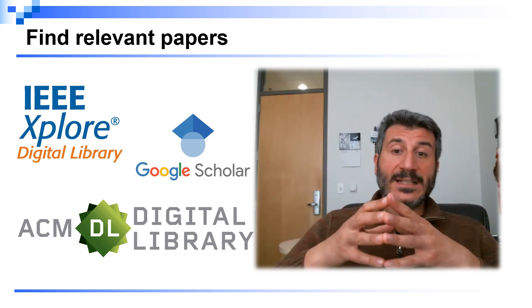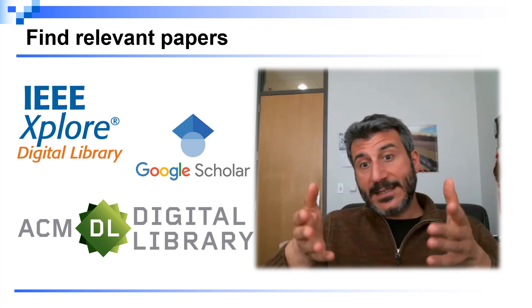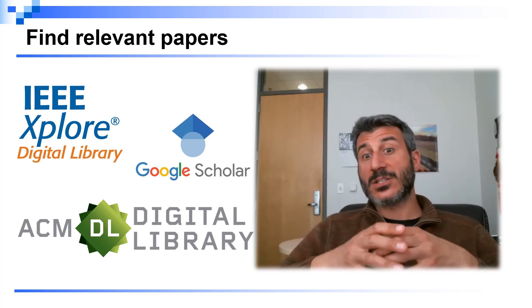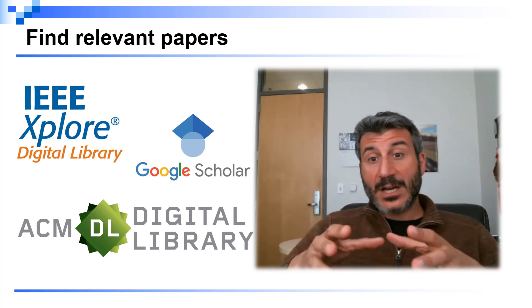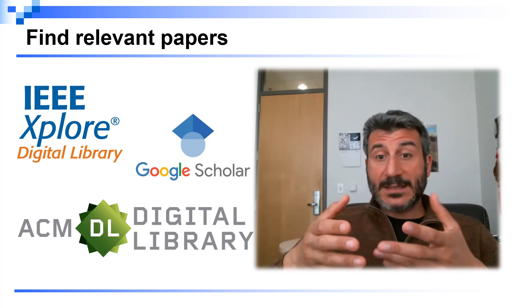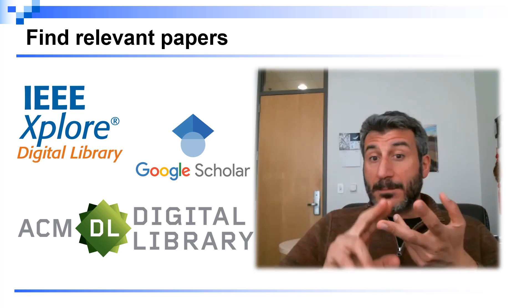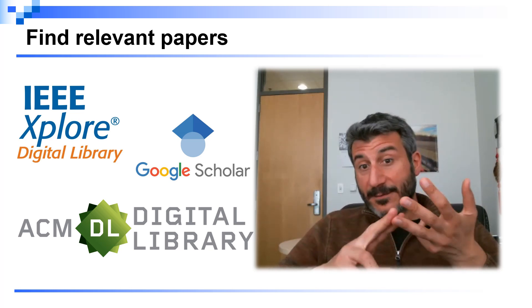Then you also need to decide among all the papers that you're going to find which ones you're actually going to cite and discuss in the related work, because sometimes some topics are hot or have been so hot that maybe there are thousands of papers that have been published around that topic. So you need to select the best papers to cite, and of course this should be the most relevant, the most important papers, and also the ones that have been published in the best venues.